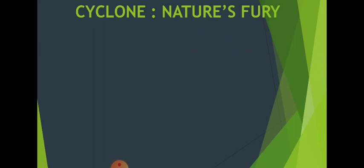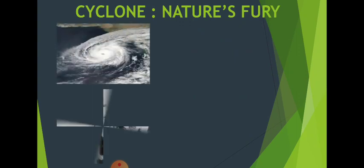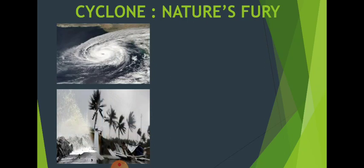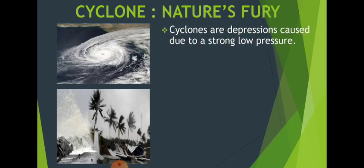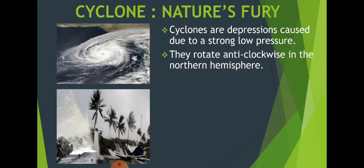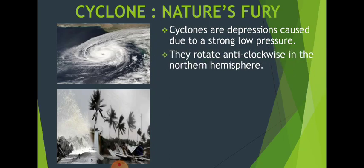Moving on, let us understand more about a cyclone — Nature's fury, a natural disaster. You can see above how a cyclone forms, how it rotates in a circular way, and below is shown the damage it causes, mostly in coastal areas. Cyclones are depressions caused due to strong low pressure, which generates when there is a huge temperature difference. They rotate anti-clockwise in the northern hemisphere and clockwise in the southern hemisphere, due to the Coriolis force.